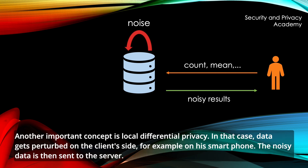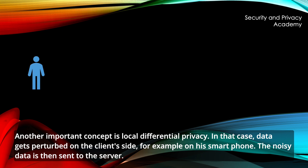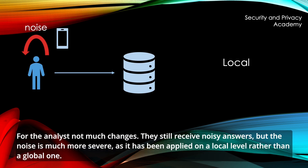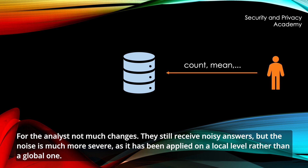Another important concept is local differential privacy. In that case, data gets perturbed on the client side — for example, on a smartphone. The noisy data is then sent to the server. For the analyst, not much changes; they still receive noisy answers, but the noise is much more severe, as it has been applied on a local level rather than a global one.